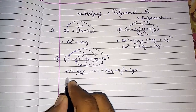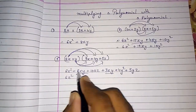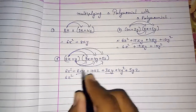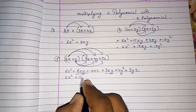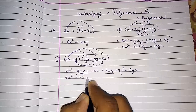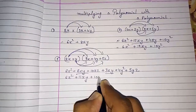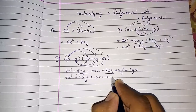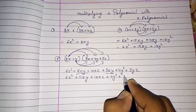So the final answer is: 6x square, plus 8xy and 3xy combined gives 11xy, plus 10xz, plus 4y square, plus 5yz.